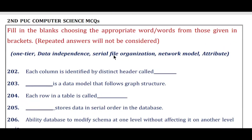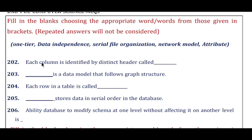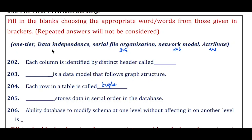Question 202: Each column is identified by a distinct header — the answer is attribute. Question 203: Dash is a data model that follows a graph structure — the answer is network model. Question 204: Each row in a table is called — the answer is tuple. Question 205: Dash stores data in serial order in the database — the answer is serial file organization. Question 206: The ability of the database to modify schema at one level without affecting another level is called — the answer is data independence.